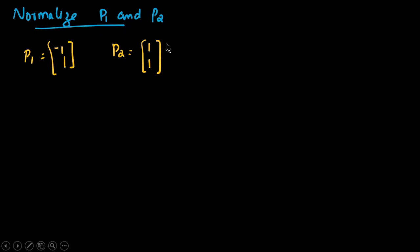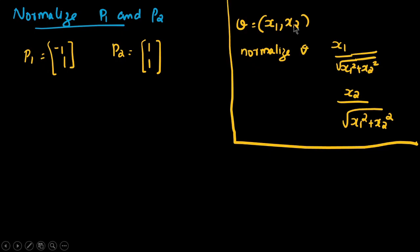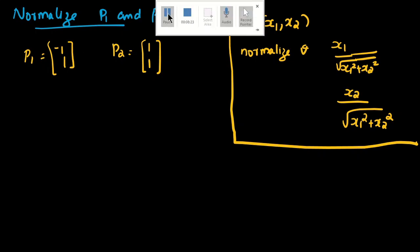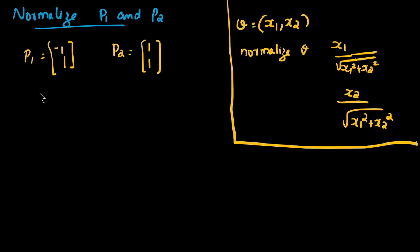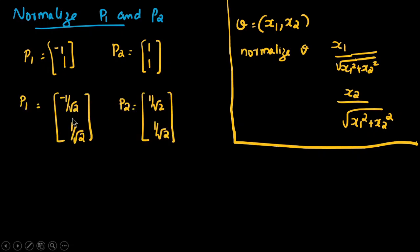Now we have to normalize these eigenvectors. Our eigenvectors are [−1, 1] and [1, 1], and we must normalize them so each has length 1. To normalize a vector v = [x1, x2], we divide each component by the square root of x1² + x2². So P1 normalized becomes [−1/√2, 1/√2], and P2 normalized becomes [1/√2, 1/√2]. These are the orthonormalized eigenvectors.